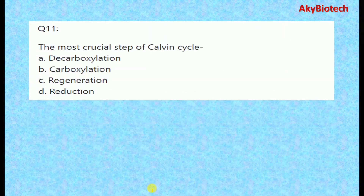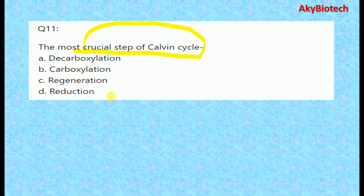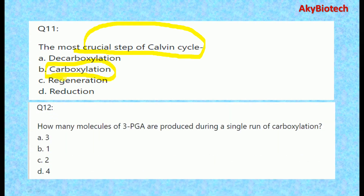Question eleven: The most crucial step of the Calvin cycle is carboxylation — that is the number one most crucial step. Question twelve: How many molecules of 3-phosphoglycerate are produced during a single run of carboxylation?